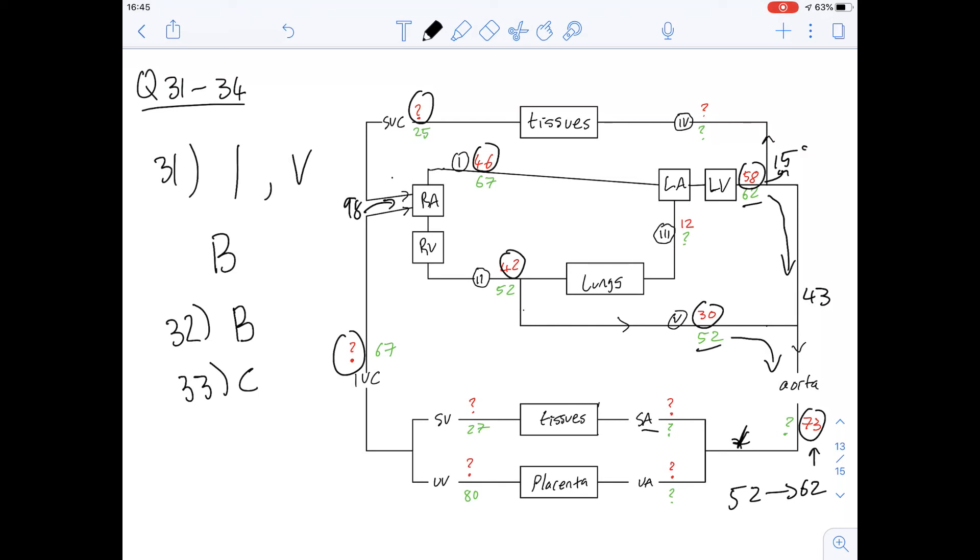So it's just about working backwards then. And that gives us an answer of 15% of the CVO going through point 4 up here. And that gives us an answer B for 34. So that was questions 31 to 34. I hope that helped. Thanks.